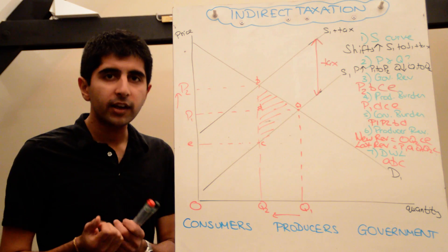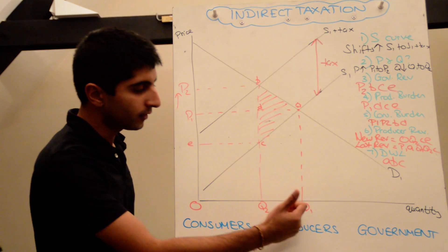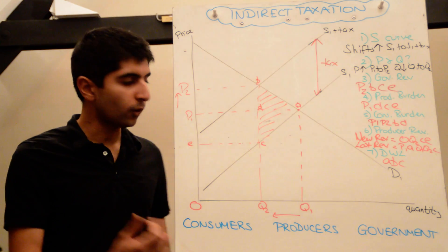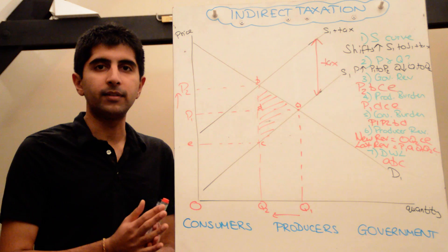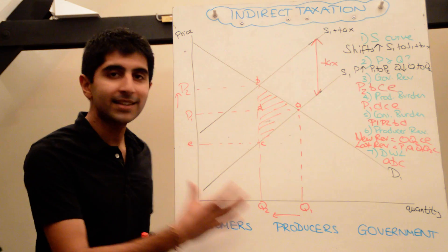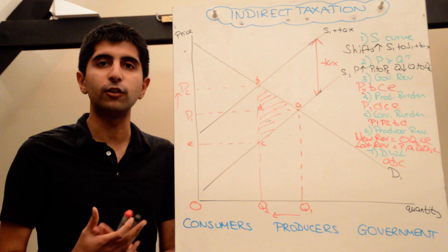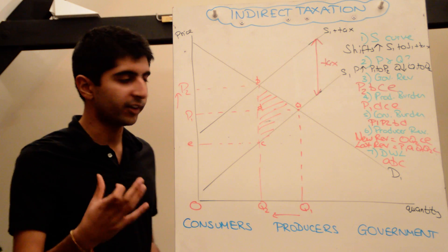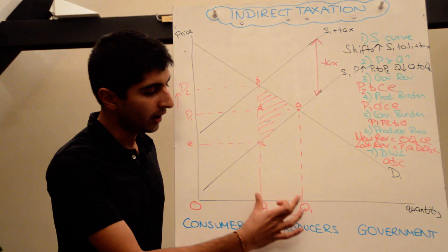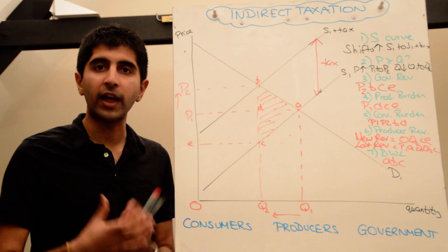Looking further, workers may also suffer here because as the number of units being sold and produced is falling, that may mean that the number of workers in the business will also fall. It may lead to unemployment, which can impact workers as well. That's not a good thing. However, if demand is inelastic, there will be a smaller fall in quantity and therefore that argument may be limited.